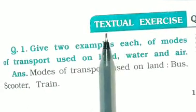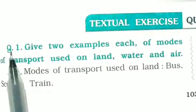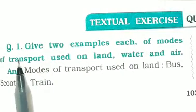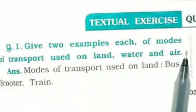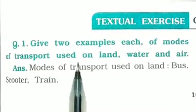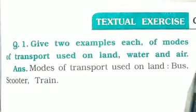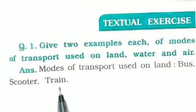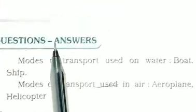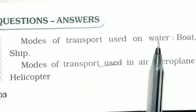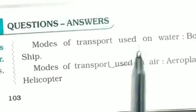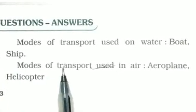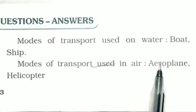Now we come to textual exercise questions and answers. Question number one: Give two examples each of modes of transport used on land, water, and air. Answer: modes of transport used on land, on water, and on air — the aeroplane and helicopter.